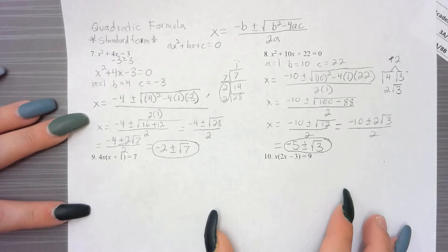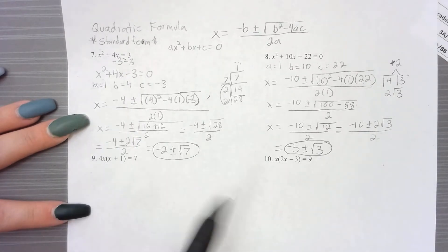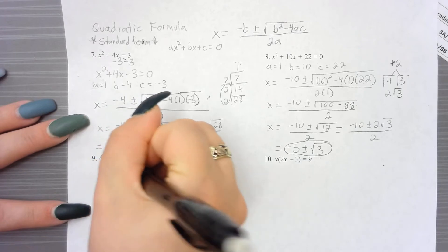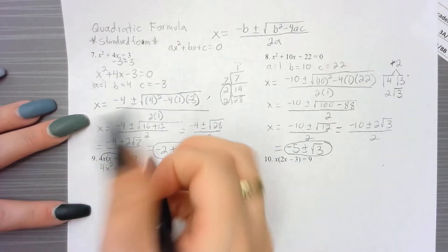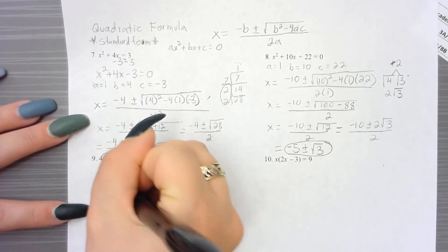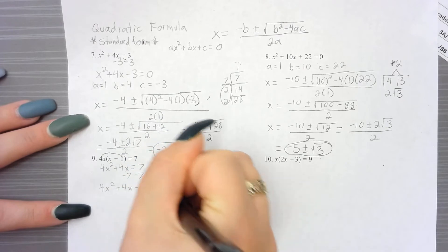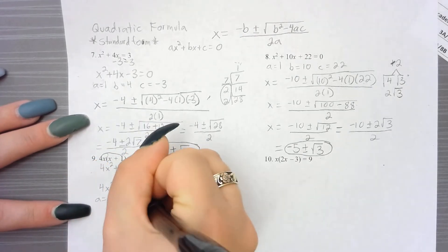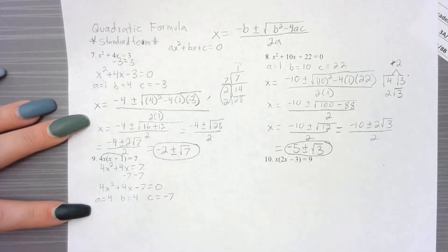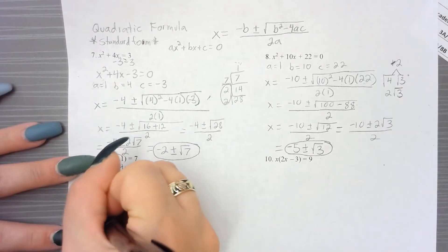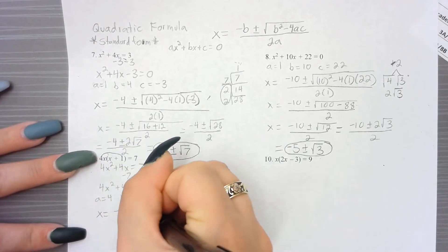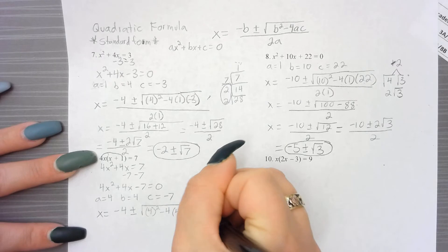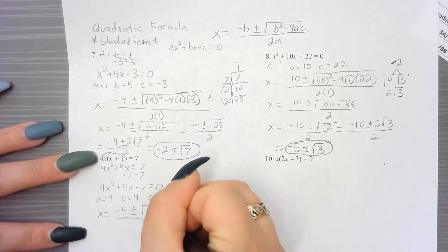The next ones are in different forms, so we need to get to standard form first. We distribute 4x out to get 4x squared plus 4x equals 7, then subtract 7 from both sides to get 4x squared plus 4x minus 7 equals 0. We identify a, b, and c: a is 4, b is 4, and c is negative 7. We plug in: x equals negative 4 plus or minus the square root of 4 squared minus 4 times 4 times negative 7, all over 2 times 4.